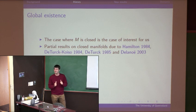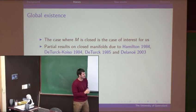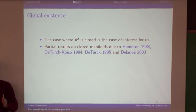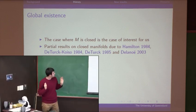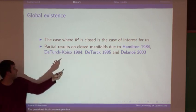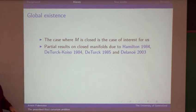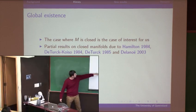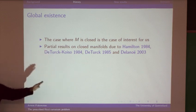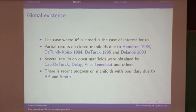Today we are interested in the case where M is closed — compact and with no boundary. Global existence results in this case were previously obtained by Hamilton, who proved a series of very nice theorems. Then there is Deterk, a negative result by Deterk and Koiso, and most recently Delano has a global existence theorem. I will briefly describe these results, but let me first give credit to people who work on the problem in other settings.